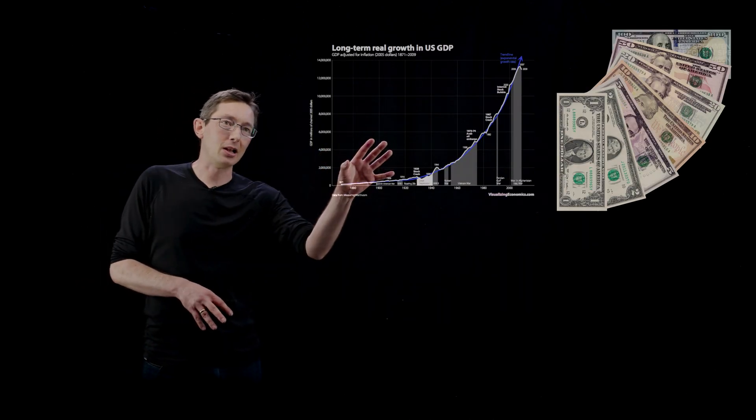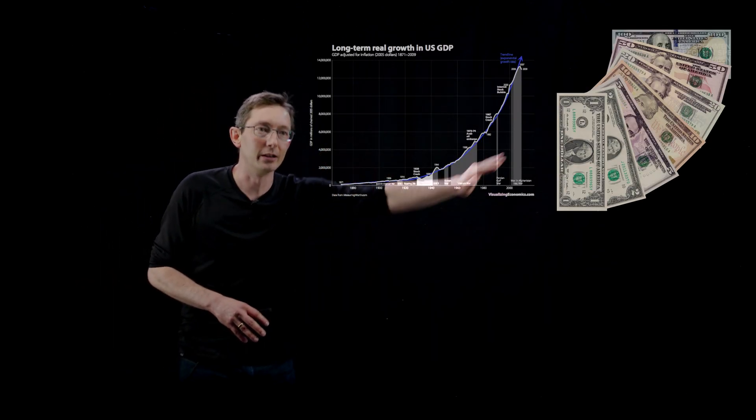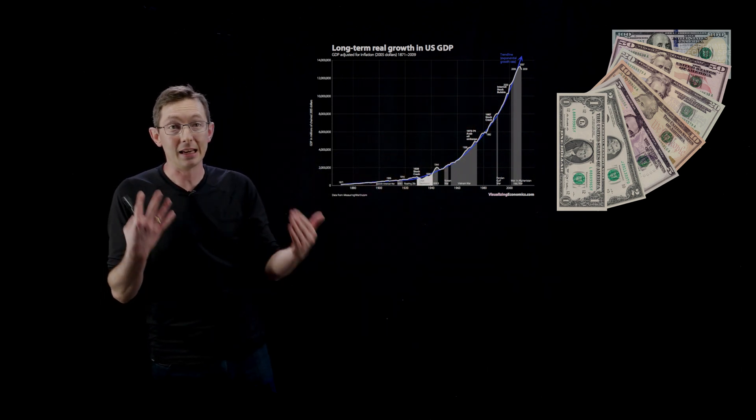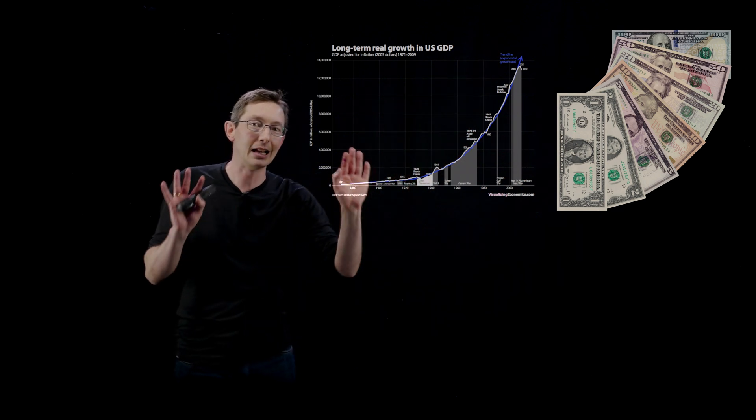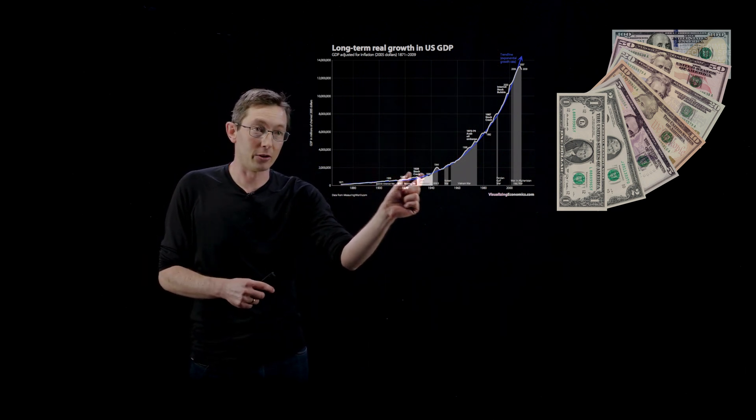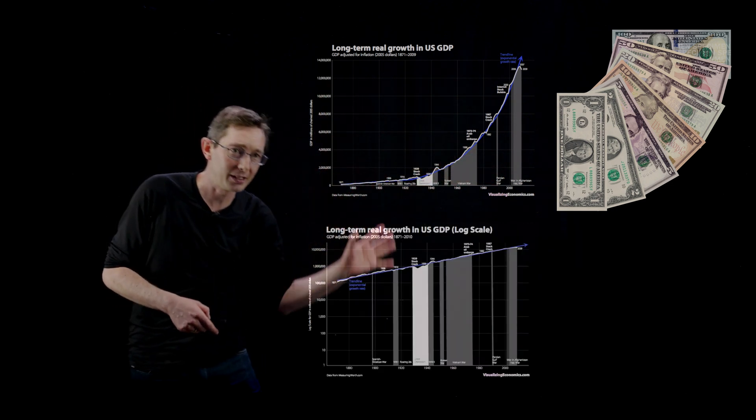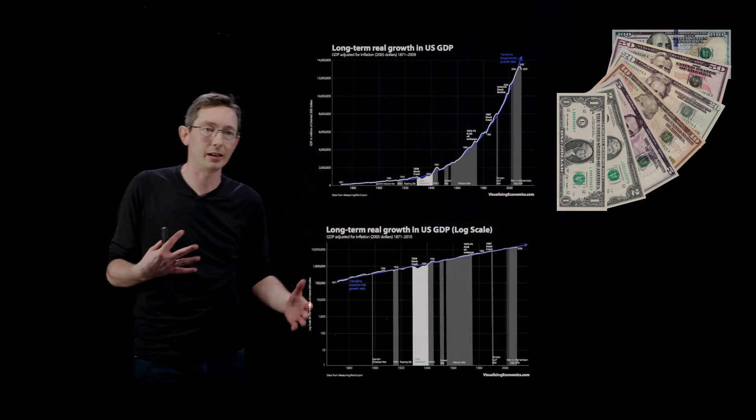So if you go back to this plot of the long-term growth in the gross domestic product, the GDP of the U.S., we see that this really is very nearly exponential in time even if you account for great depressions and recessions and stock market crashes.